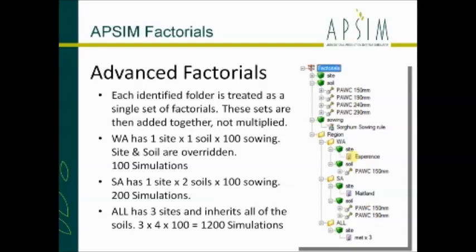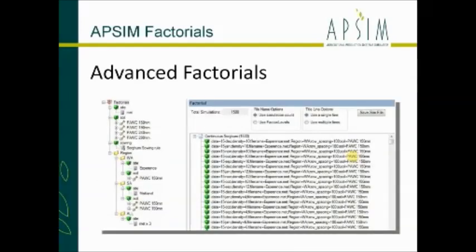So it does all three sites by the four soils by the 100 sowing options, which gives us 1,200 simulations. This is an oversimplification of the 47-site problem where there's a different soil for each site, but that's how we'd set it up. What we saved was 800 simulations in a very simple demonstration. At the end you click on your factorials node and it shows we've now got 1,500 simulations total.